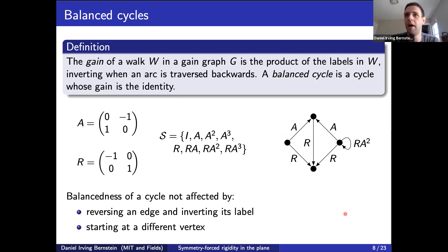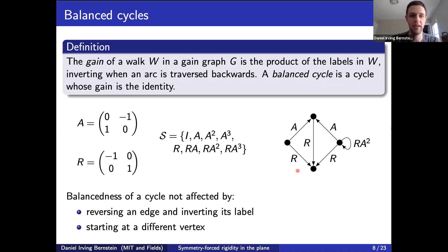Implicit in this definition is the claim that it doesn't matter which vertex you start at. Starting at a different vertex gives A-inverse R times R-inverse A, which is also the identity. This is a sensible definition. As a non-balanced example, going around the inner three-cycle clockwise gives A times R-inverse times R, which is not the identity. Starting at a different vertex gives R times R-inverse times A, which equals A — a different group element, but also not the identity.